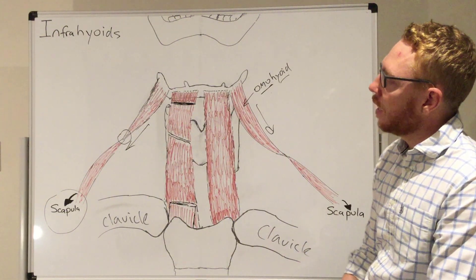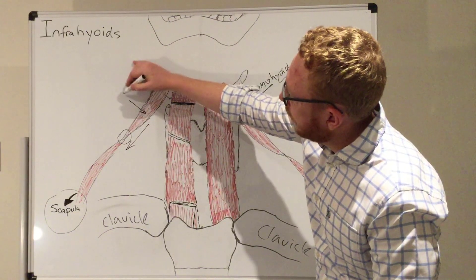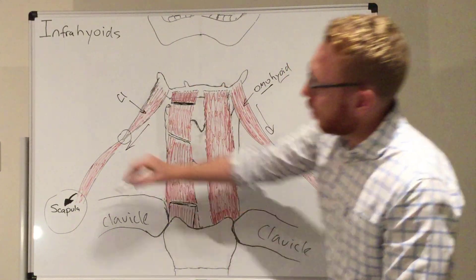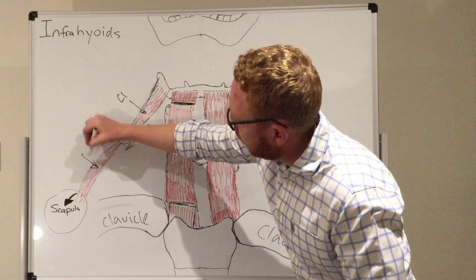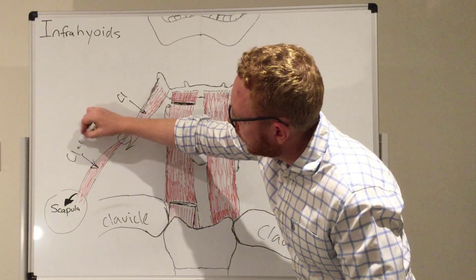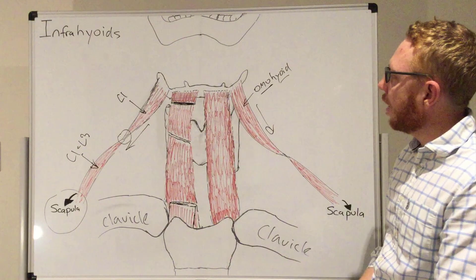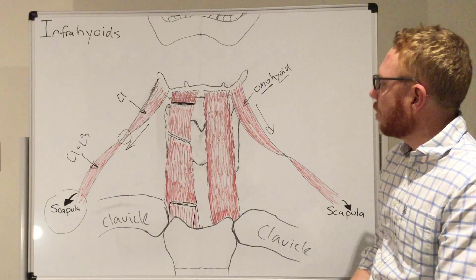That's its primary action, to draw the hyoid or depress the hyoid, particularly when it's been elevated through speech or through swallowing. The innervation of this particular muscle: the superior belly seems to be solely innervated by C1, whereas the inferior seems to be C1 to C3. That's the omohyoid muscle.